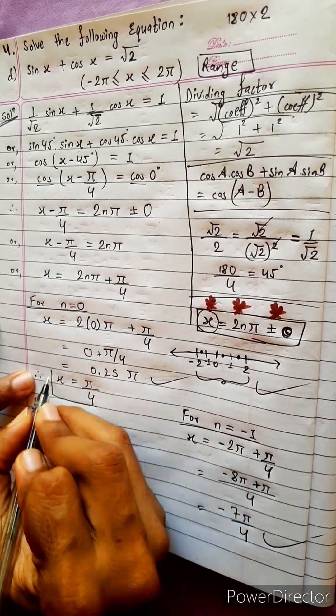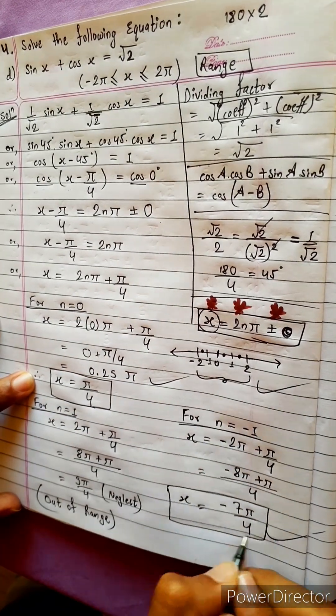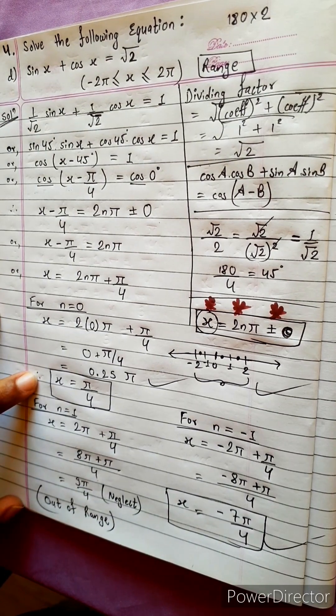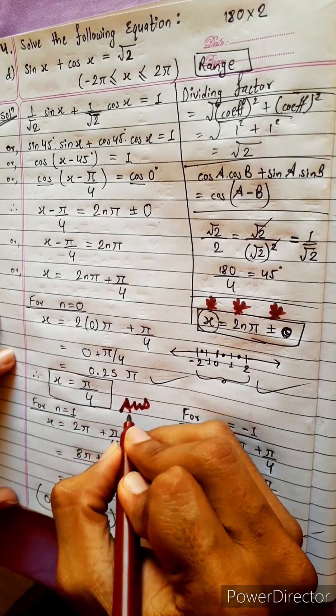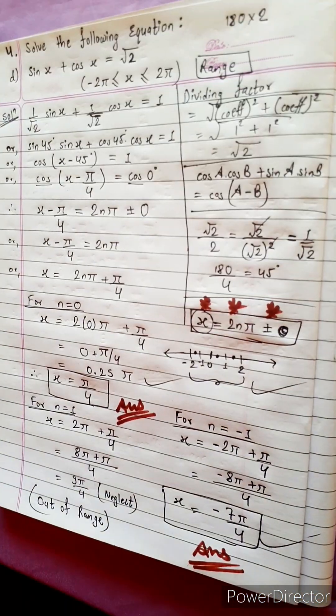So overall we got 2 answers. So these are the answers. Let's check in the book. How much is given answer? Yes, these 2 are given as answers. Then no problem. Time to do next question.